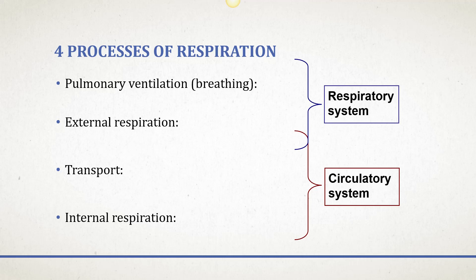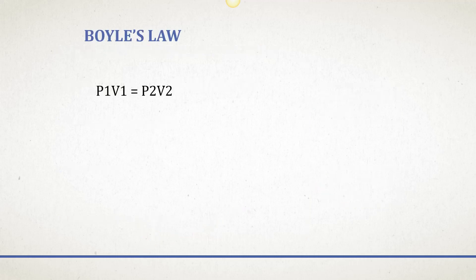External respiration is talking about an exchange of gases between the alveoli and the blood. We consider that external because the inside of our respiratory tract is really considered the outer surface of our body — it's only when substances get into our bloodstream that they are internalized. So external respiration is the exchange of gases between the alveoli and the blood. Transport refers to the transportation of those gases through the bloodstream, and internal respiration is the exchange of gases between the blood and the tissues — that process of cellular respiration that happens at the tissue level.